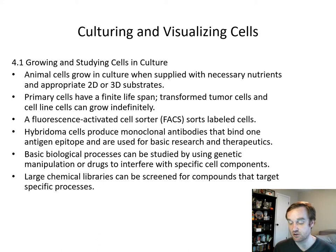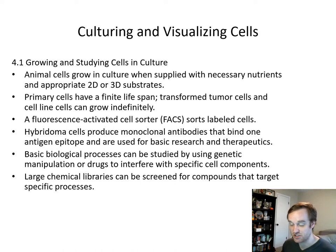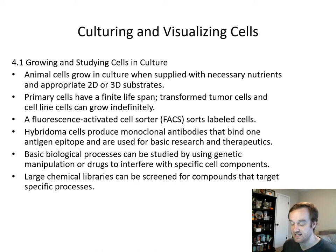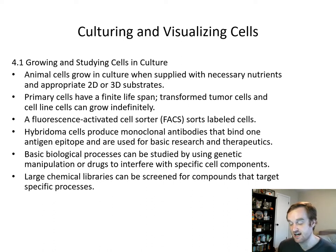Basic biological processes can be studied using genetic manipulation or drugs to interfere with specific cell components. It's important to use cell lines for drug development or genetics so we don't have to use people right away if these drugs are unproven. Large-scale chemical libraries can be screened for compounds that target specific processes. During the coronavirus pandemic, these large libraries of therapeutics can be screened using cell lines to make sure there's no adverse effect on human cells.